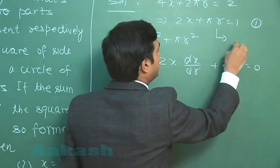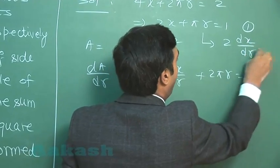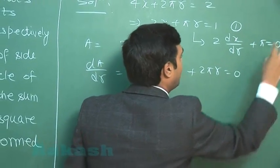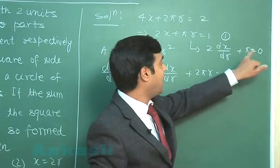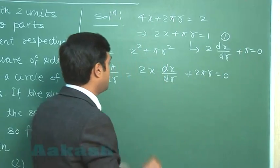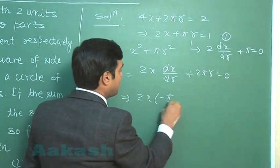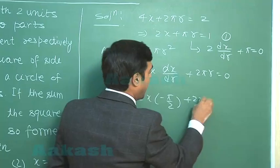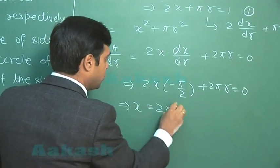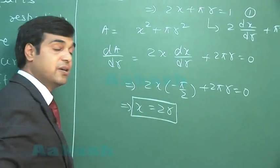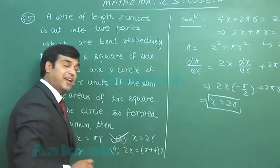Now if I talk about this equation on differentiating, 2 dx/dR plus π equals 0. From here, we can take the value of dx/dr as minus π/2 and can substitute here to get 2x into minus π/2 plus 2πr equals 0, or x equals 2r. We can see from the given options, option 2 is the correct one.